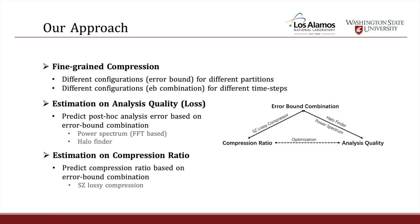Our approach uses fine-grained compression with different configurations for different partitions and different timestamps. To do that, we build the relationship between user-defined error-bound and both analysis quality and compression ratio. As long as we build this relationship, we can optimize between compression ratio and analysis quality through rate-quality modeling. In our research, the analyses are concentrated on NICS simulations: the power spectrum, which is FFT-based post-hoc analysis, and also Halo Finder. For compression ratio, we use SZ lossy compression.